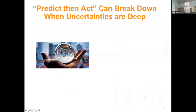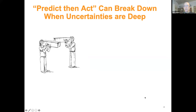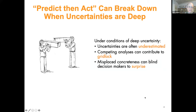While predict-then-act is incredibly useful in a wide variety of cases — you never want to fly on an airplane where the designers didn't work well in that mode, or live downstream from a dam — there are cases where the uncertainties are such that predict-then-act breaks down. Under conditions of deep uncertainty, there are huge pressures to underestimate uncertainties, competing analyses can lead to gridlock, and policy recommendations predicated on forecasts become vulnerable when people attack the forecast rather than the policy recommendation.